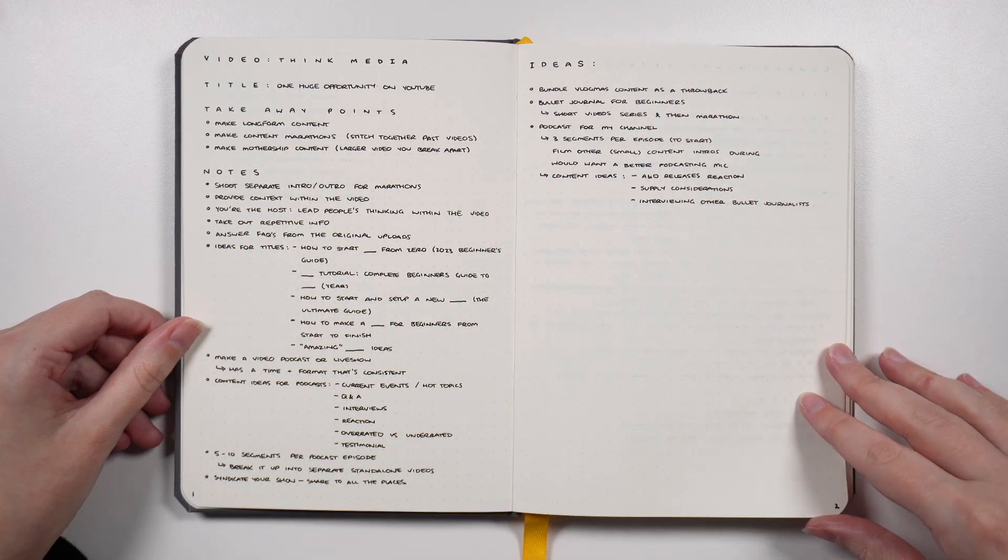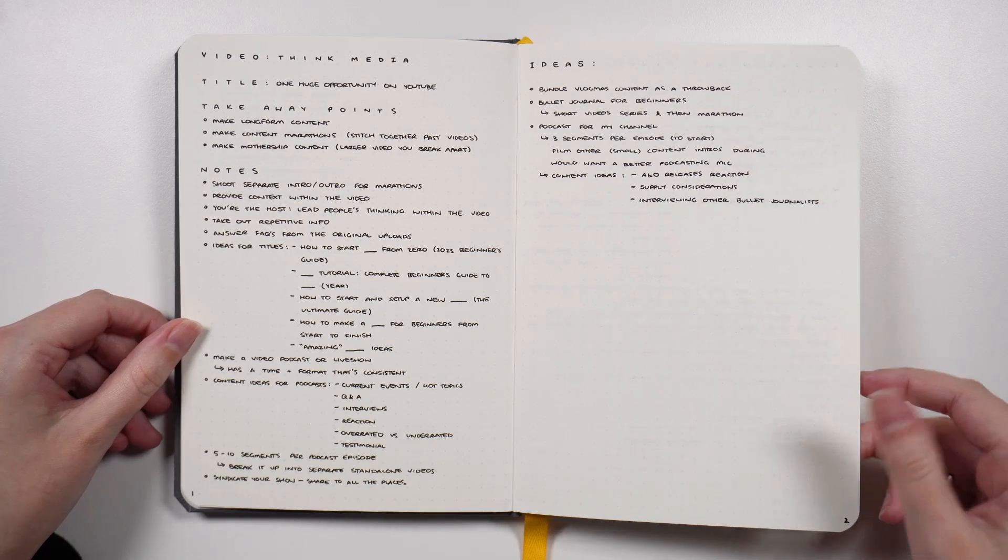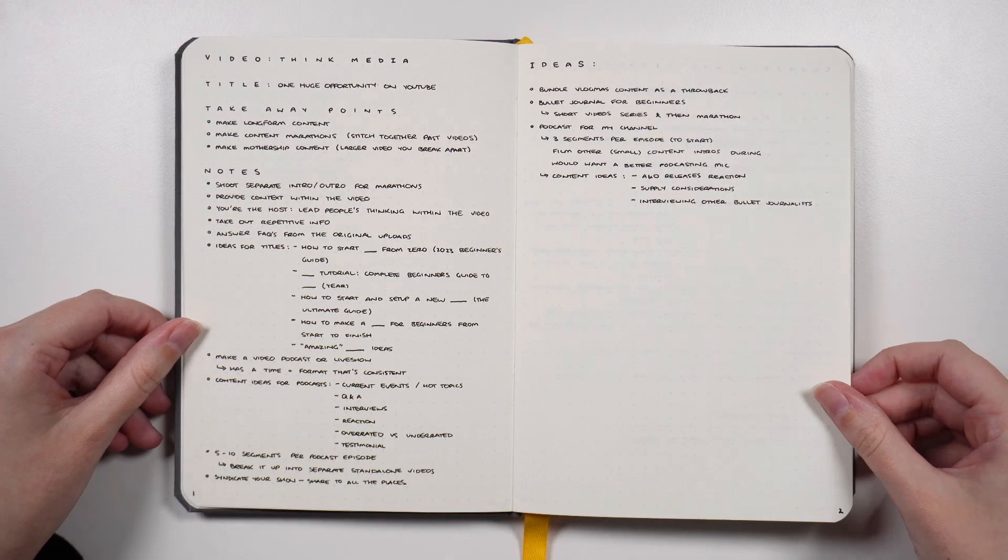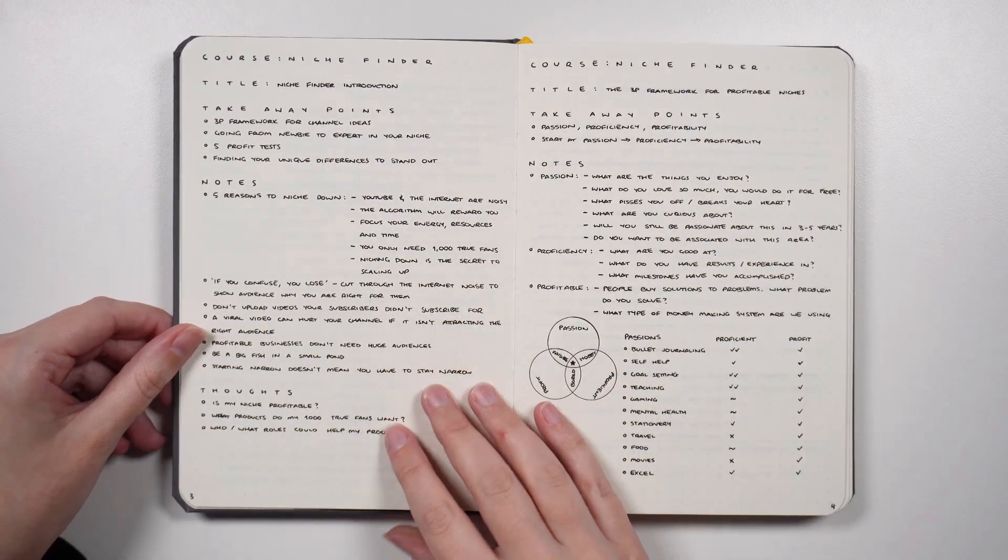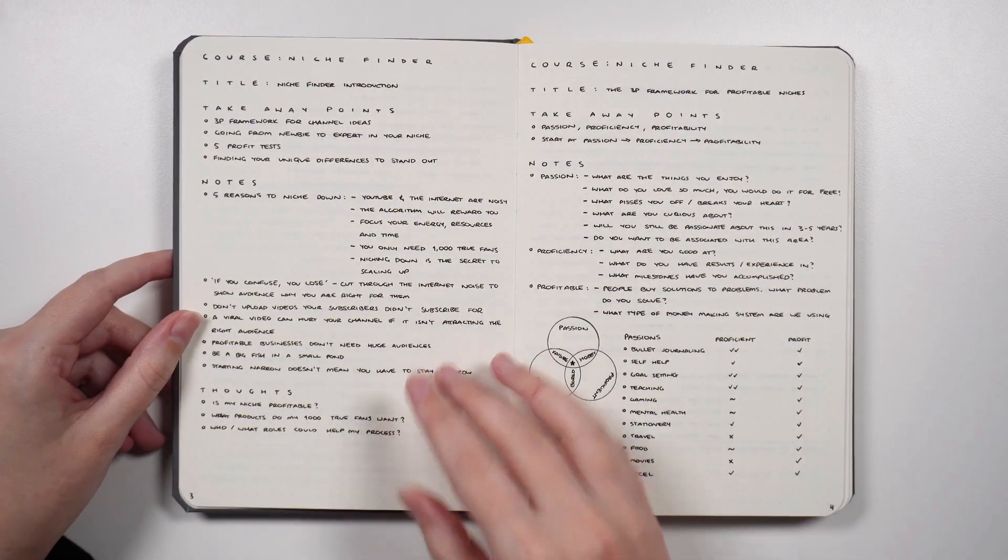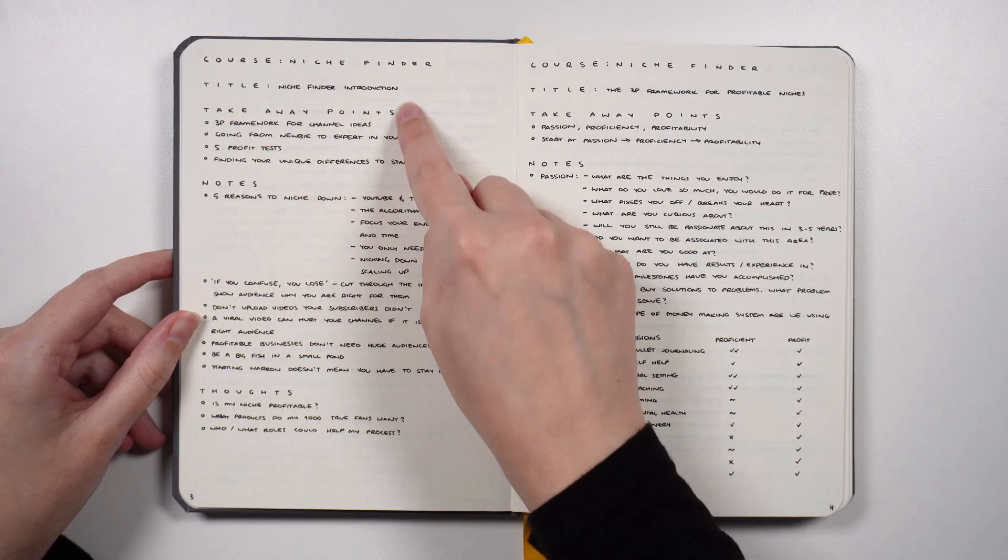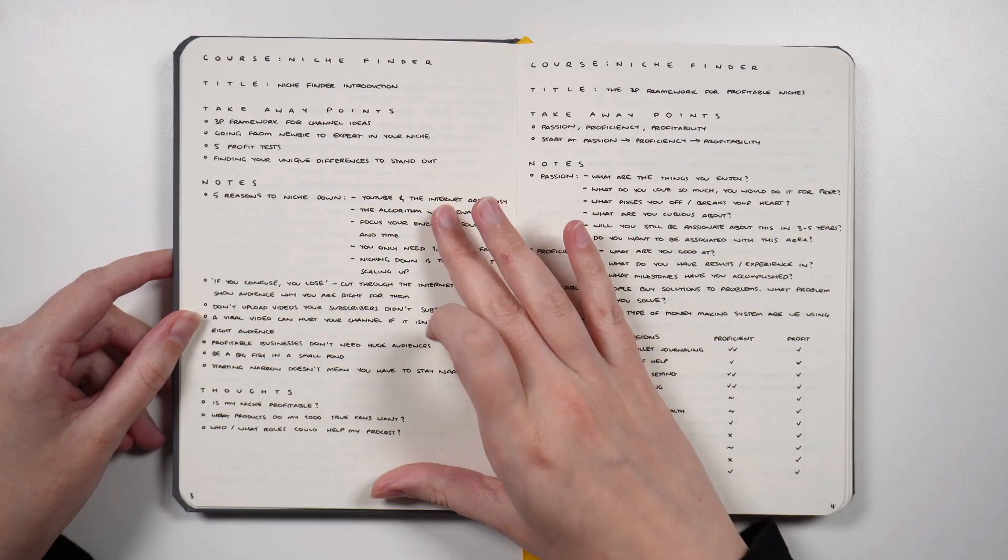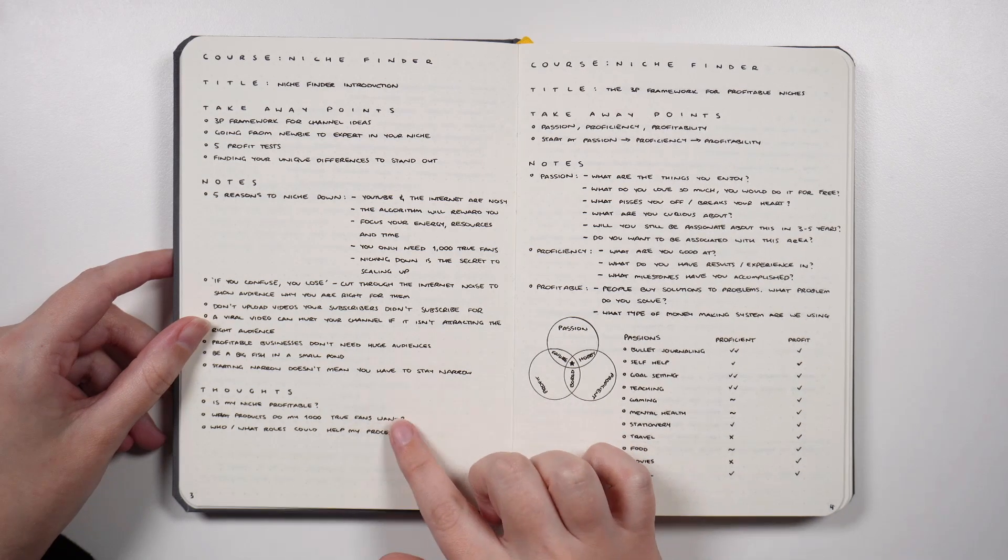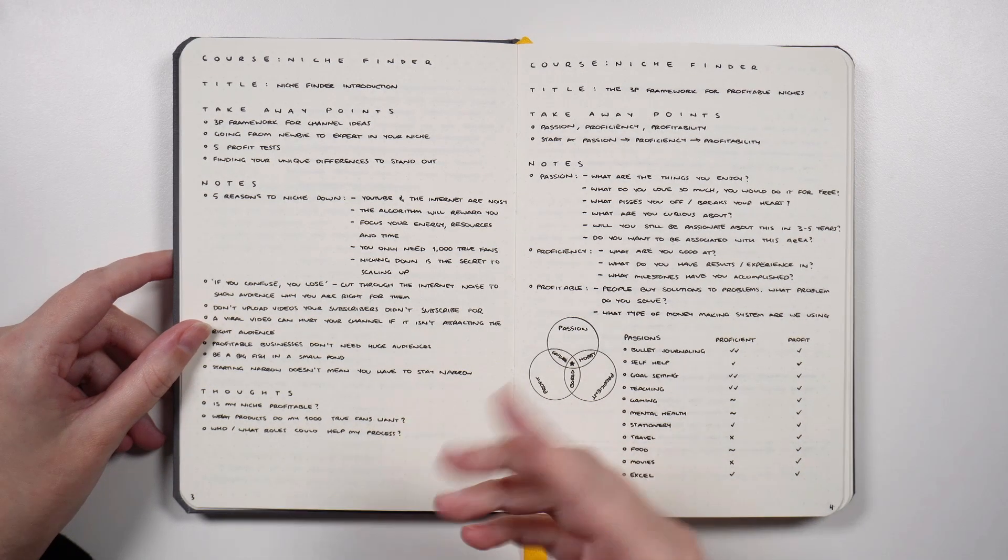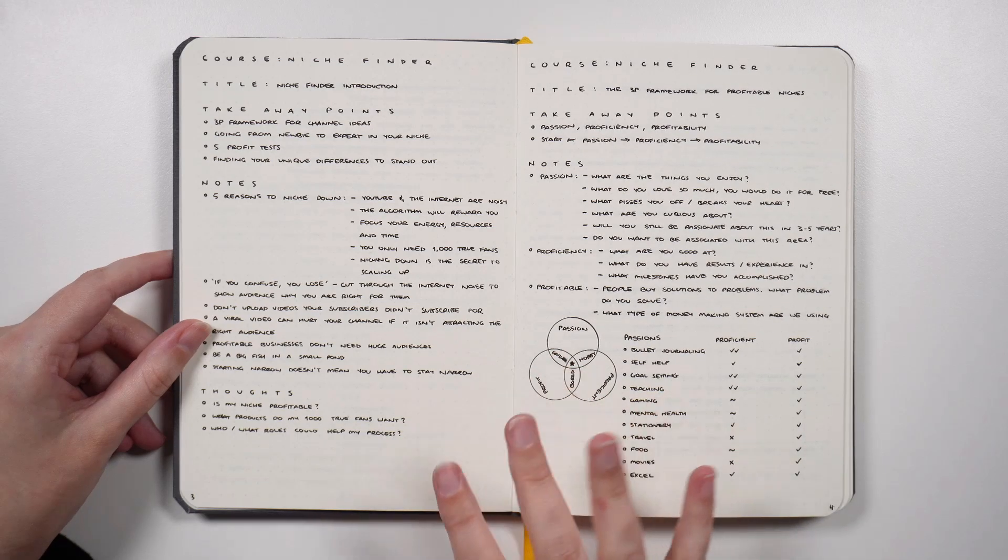But as I've gone through, obviously different pieces of PD need different things, so the layout does kind of change a little bit. For our next one, this was a course that I was doing called Niche Finder. So we have source, title, takeaway points, notes, and then in this part I just put thoughts rather than ideas because it wasn't necessarily anything that was an action or doable. It was just some things that I was thinking of.